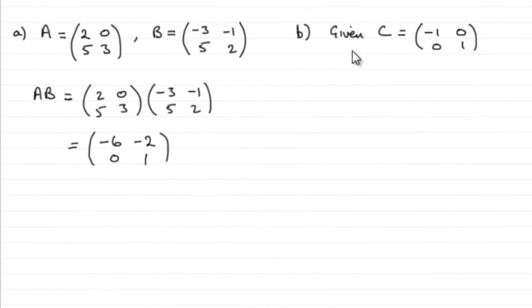In part B we're given that the matrix C is minus 1, 0, 0, 1 and asked to say what kind of transformation it represents. You can either learn these or just try and remember them, but I often find difficulty trying to remember these.